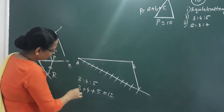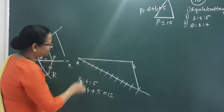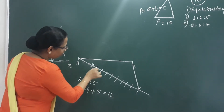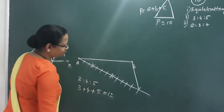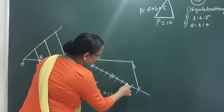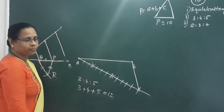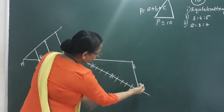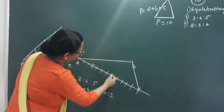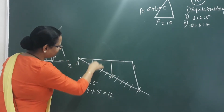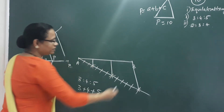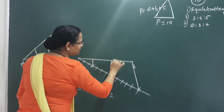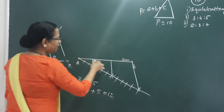We mark the ratio 3, 4, 5 on the line. Count 1, 2, 3 — mark it. Then 1, 2, 3, 4 — mark it. Then 1, 2, 3, 4, 5 — mark the 3 parts. If we join these, we will have a parallel line. Using a set square and parallel lines, we divide the line AB into the required parts.